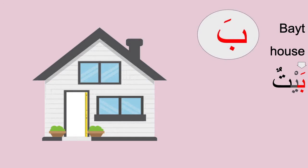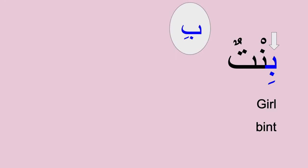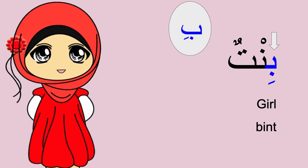Ba with Fatha: Ba — Bayt (house). Ba with Kasra: Bi — Bint (girl).